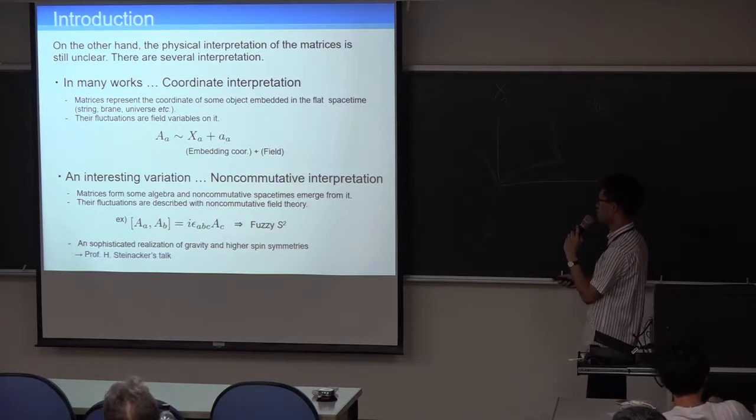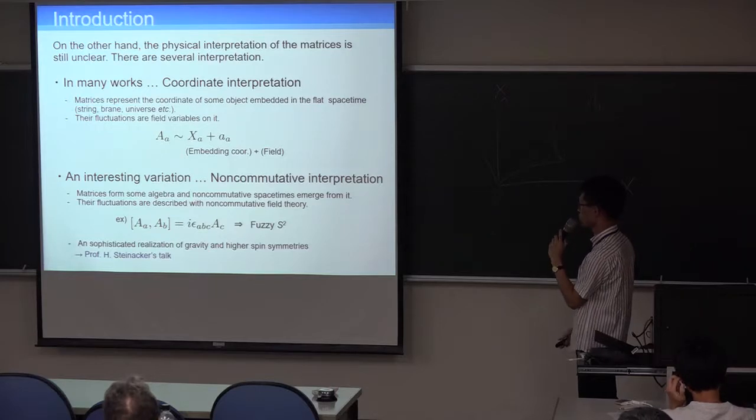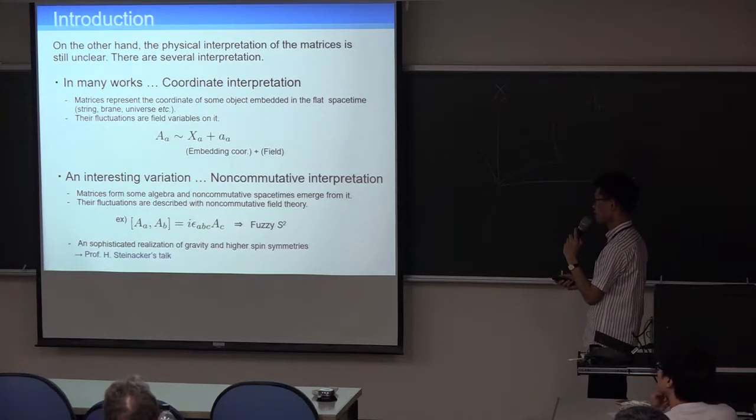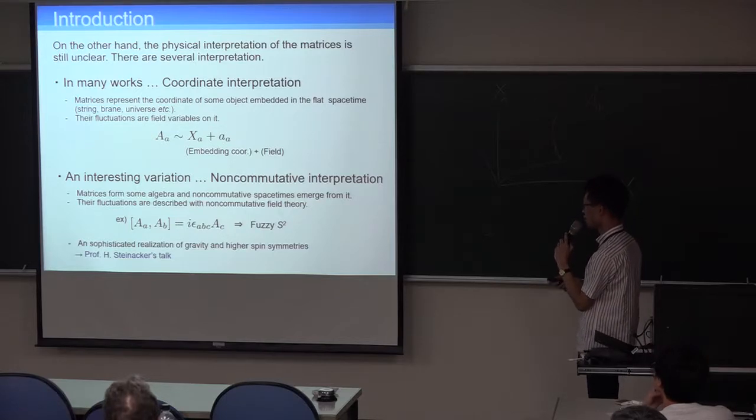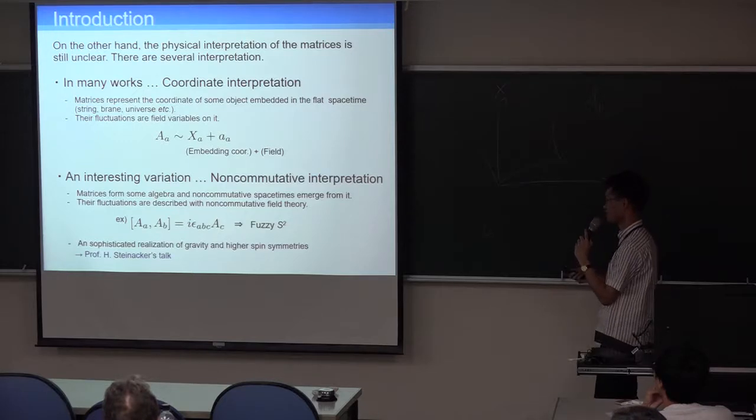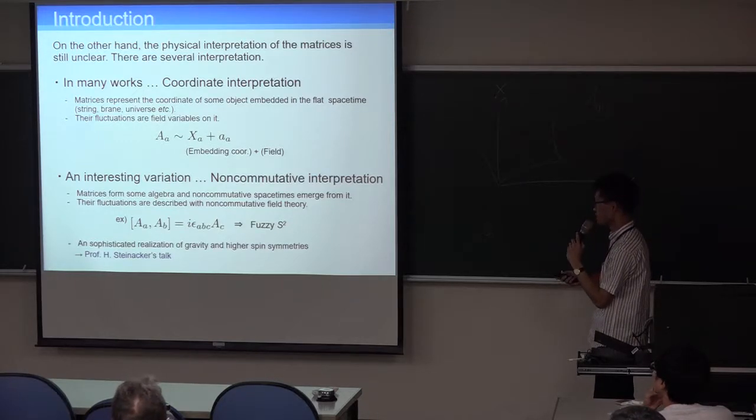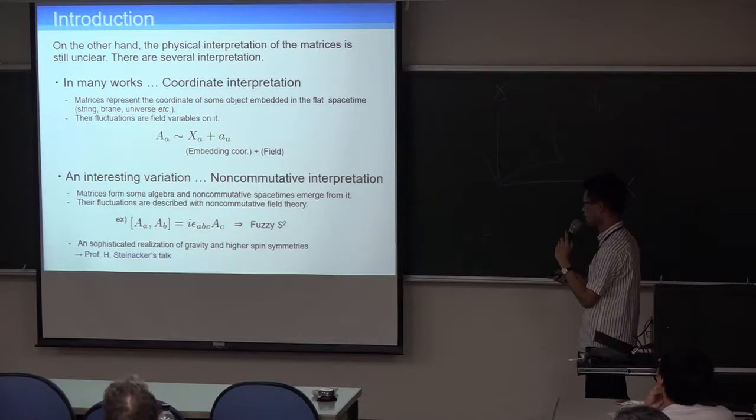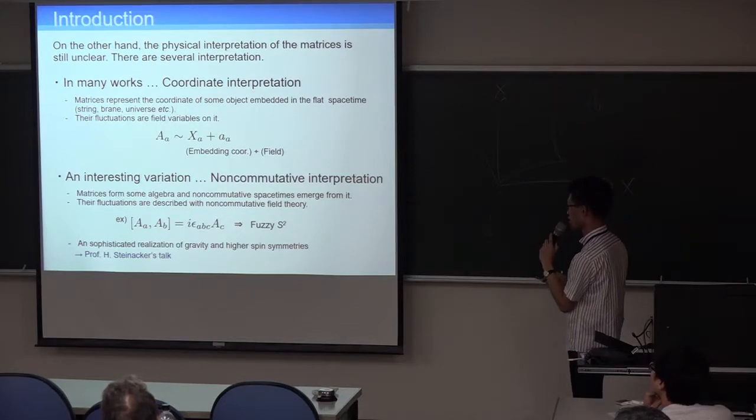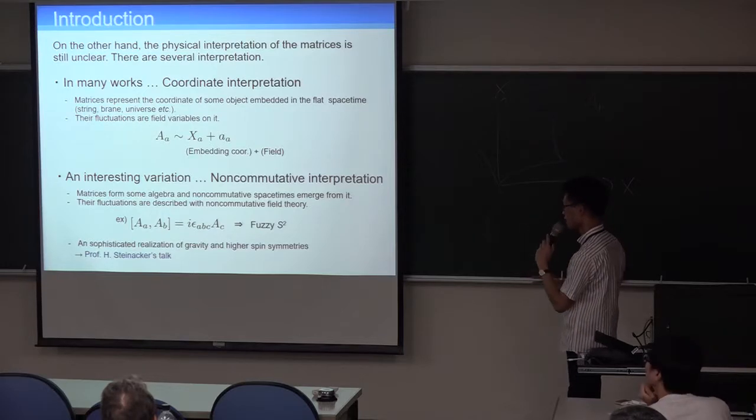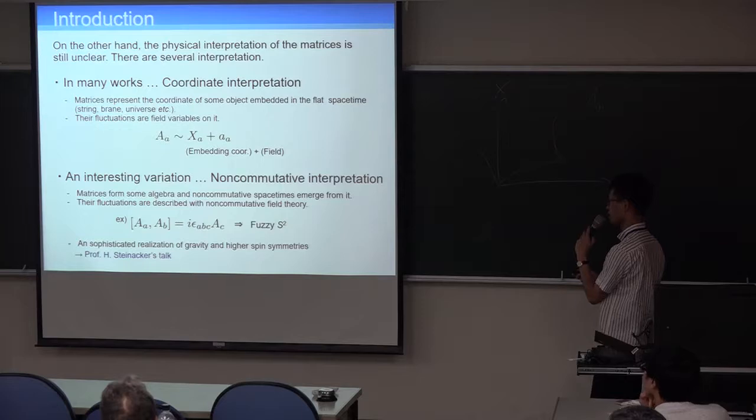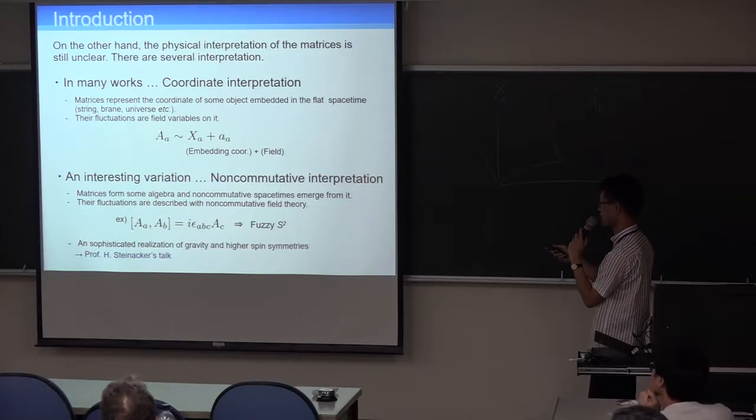And the fluctuation around that object are field variables on it. So the matrices is decomposed as embedding coordinates and the fluctuations on it. And related to this interpretation, an interesting variation is non-commutative interpretation.